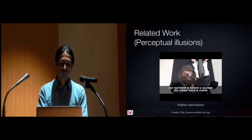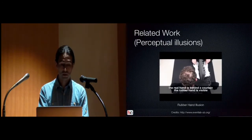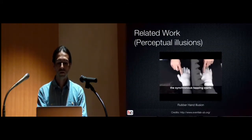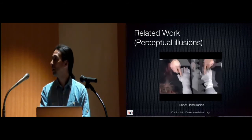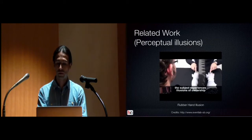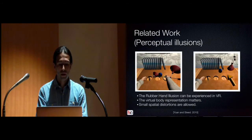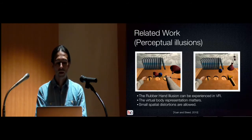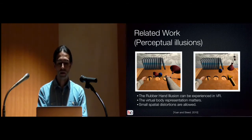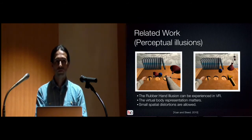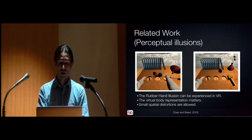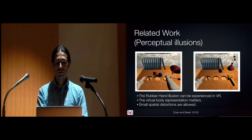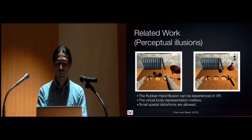Another example is the rubber hand illusion. On the left you can see the rubber hand, and on the right the real hand — again, you will see the arm pulling when the rubber hand is threatened. This illusion was reproduced in VR in research from 2010, and interestingly they found that the virtual representation matters. The response can be negated when the virtual hand is replaced with an abstract object like a 3D arrow. Essentially, users tolerate a certain amount of inconsistency between visual and proprioceptive sensations.